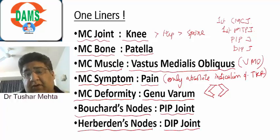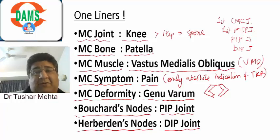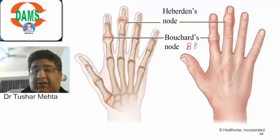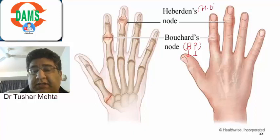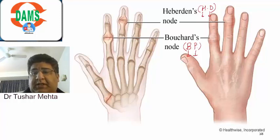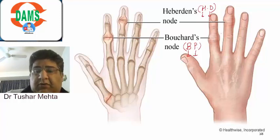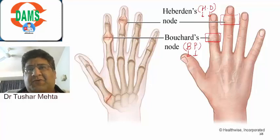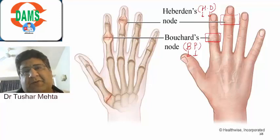The most common deformity seen is Genu varum. There are other deformities seen in the PIP and DIP joints. In the PIP, we see Bouchard's node; in the DIP, we see Heberden's node. A mnemonic to remember: 'Blood pressure leads to heart disease' — B for Bouchard, B for PIP; H for Heberden, D for DIP. So this was a quick recap on osteoarthritis, covering some of the highest yielding MCQs from this topic.